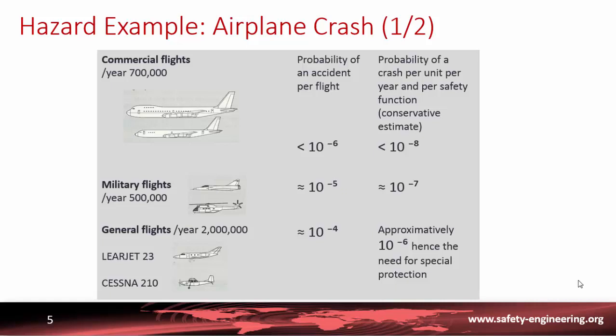General flights are on the order of several million a year, and the probability of accident per flight is also ten times more than for military flights. So the approximate probability of a crash reaching a safety function is on the order of 10^-6. Therefore, the design of nuclear plants must consider this kind of airplane crash.